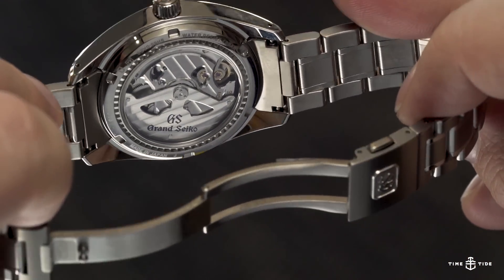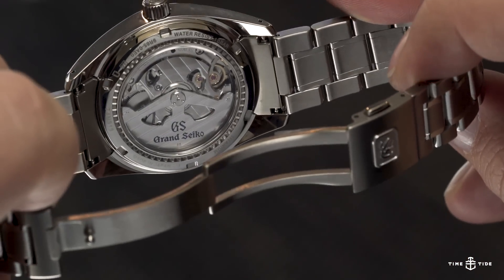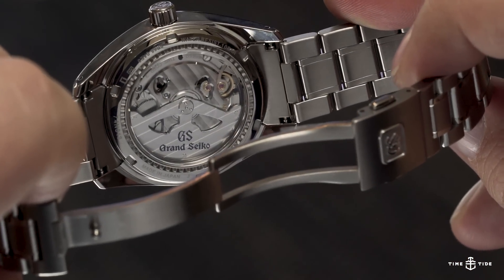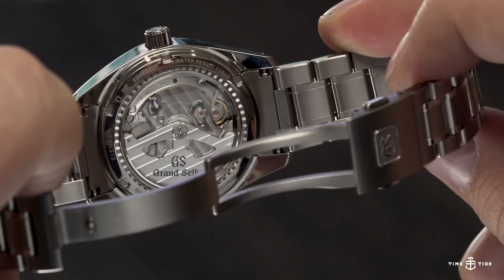In fact from a quick glance spring drive movement is indistinguishable from a conventional automatic. There's a rotor, a power barrel and no batteries in sight.